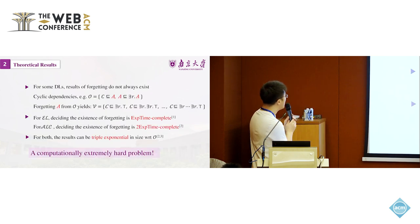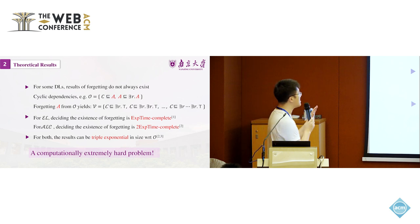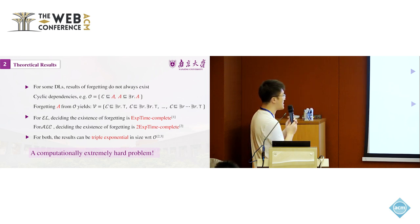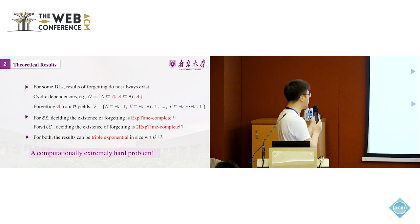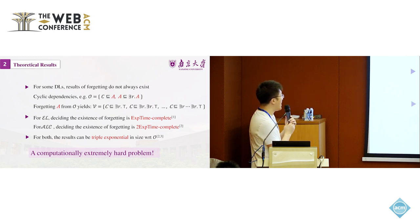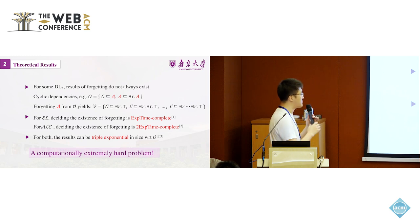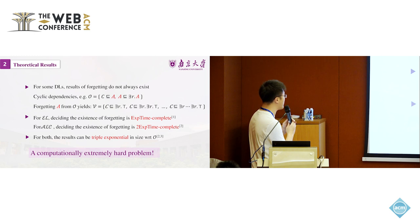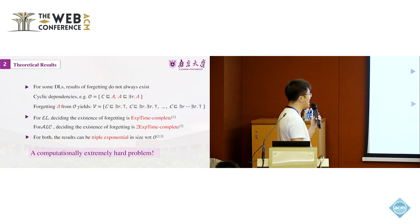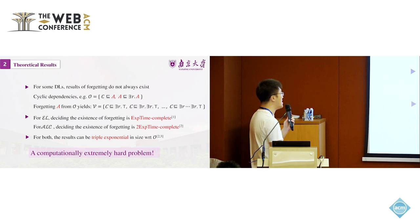Some theoretical results. For some description logics, the results of forgetting do not always exist. This is the first important one. Second, for the description logics EL, deciding the existence of forgetting is exponential time complete. Deciding for ALC is double exponential time complete. If you know about computational complexity class, you'll see this is a very hard problem. For both, the results can be triple exponential in size with respect to the input ontology, in terms of space complexity.